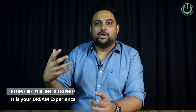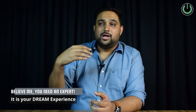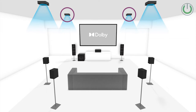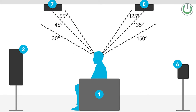3D surround sound is typically what we know as Dolby Atmos. Dolby Atmos is an audio format wherein 5.1 or 7.1 is added with extra height channels. You can add two speakers, four speakers, or six speakers in the ceiling or height channel positions and get a sound layer coming from above.